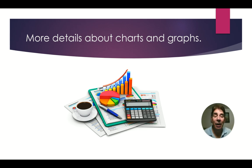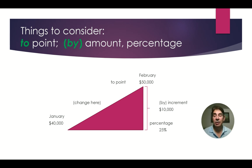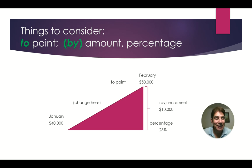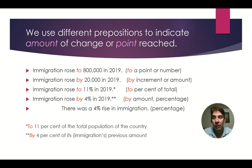Here are some more details about charts and graphs. We move to a point or by an amount or percentage. Sales started at $40,000 in January and they moved to $50,000 in February. This slope indicates movement from one point to another. But if we just look at the amount of change or the difference between the beginning and end, we use the word by — they increased by $10,000 or by 25%. We use different prepositions to indicate the amount of change or the point reached.